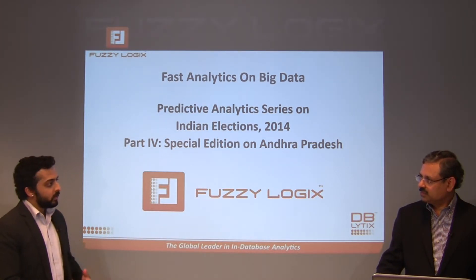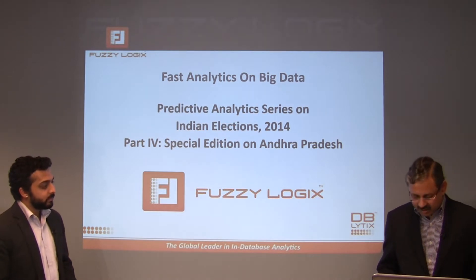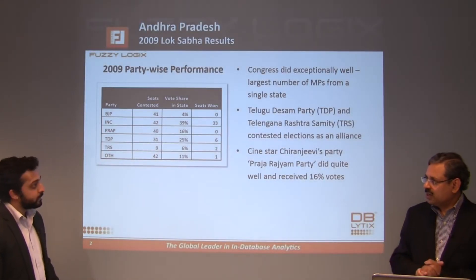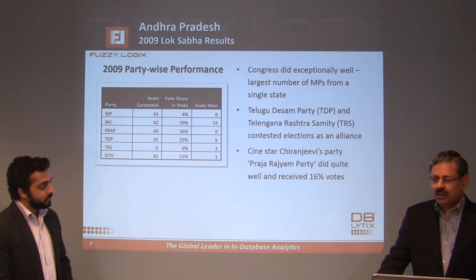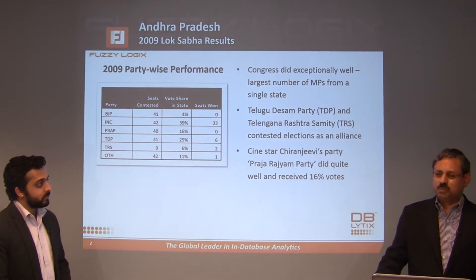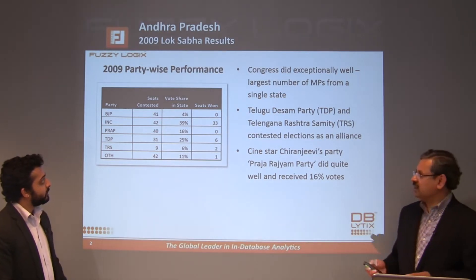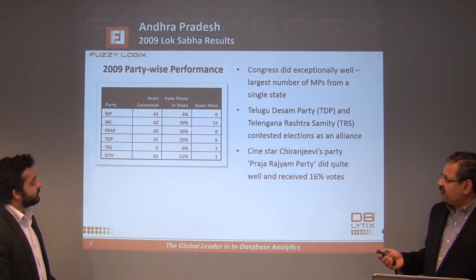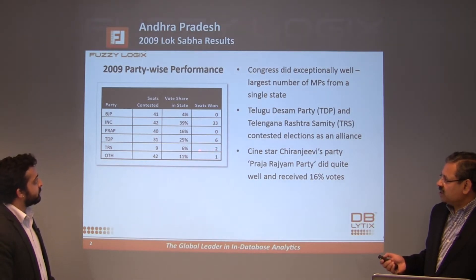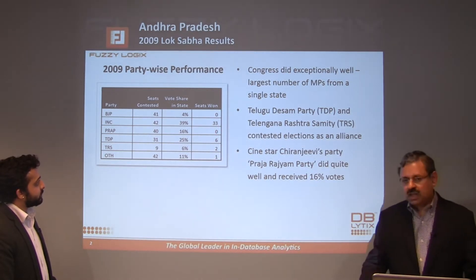Can you talk us through the 2009 situation? Sure. In 2009, the state of Andhra Pradesh sent 33 Congress MPs to the Lok Sabha. Congress got 39% of the votes and sent 33 MPs from the state. The TDP had six members of parliament. The TRS got 6% of the votes and had two MPs. And there was one MP from the Majlis-e-Ittehadul Muslimeen.